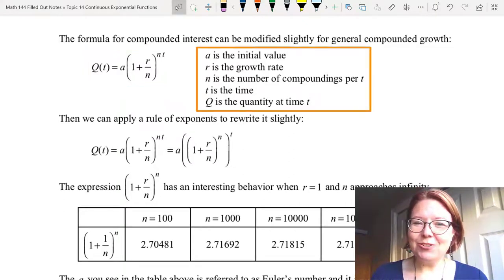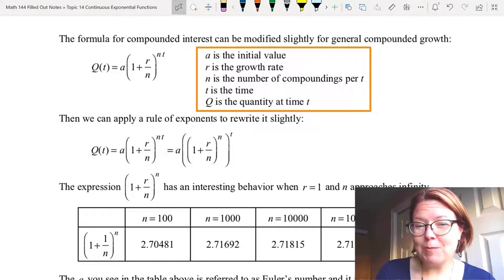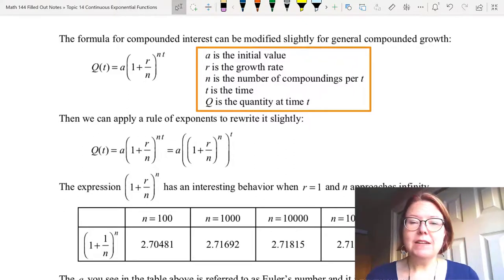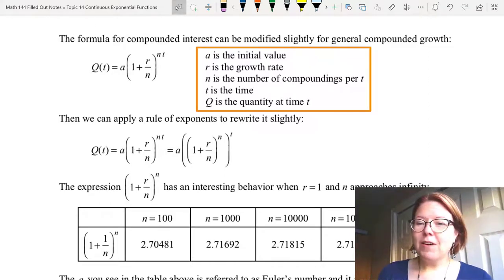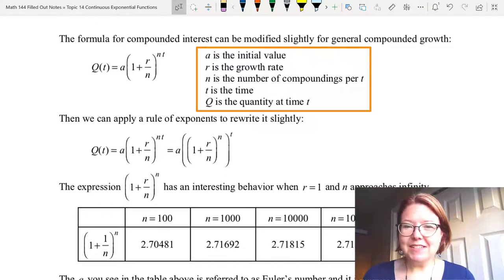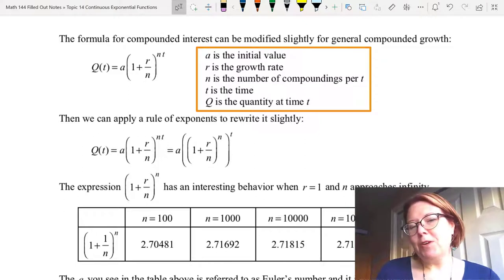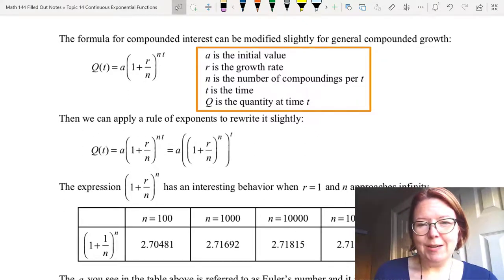In this case, a is the initial value. In our compound interest formula, that was the principle. r is the growth rate. n is the number of compoundings per time. t is the time. And capital Q stands for quantity at time t.